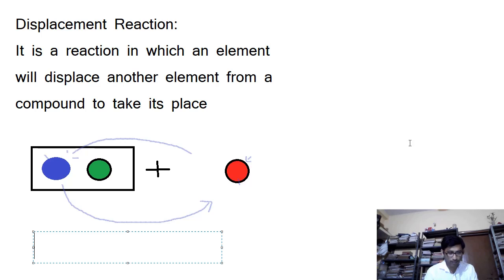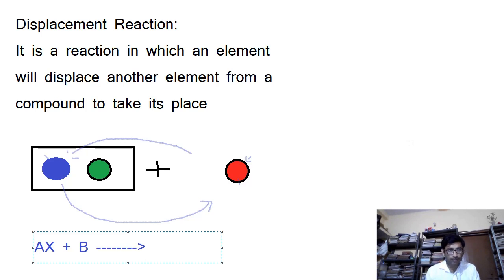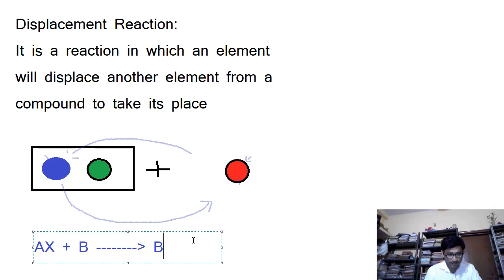We can represent this symbolically: suppose we have a compound AX reacting with B. B will displace A from the compound AX and take its place, so the product will be BX plus A. A has been displaced and B has taken its place.